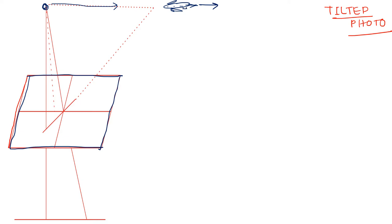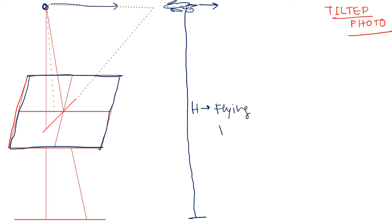There is one more concept. If this is my aircraft, here is my camera denoted as point O. The entire height measured with respect to mean sea level (MSL) is denoted as H, which is called the flying height. This is denoted as capital H.